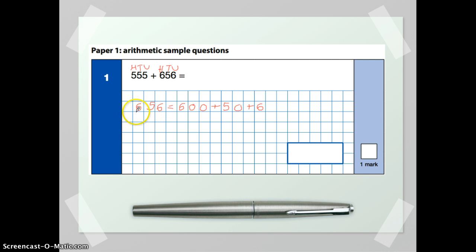So we've partitioned our larger three-digit number. Now we're going to partition our smaller three-digit number. So it's 555. So we'll put that just underneath. So again, when partitioning, start off with the leftmost column.